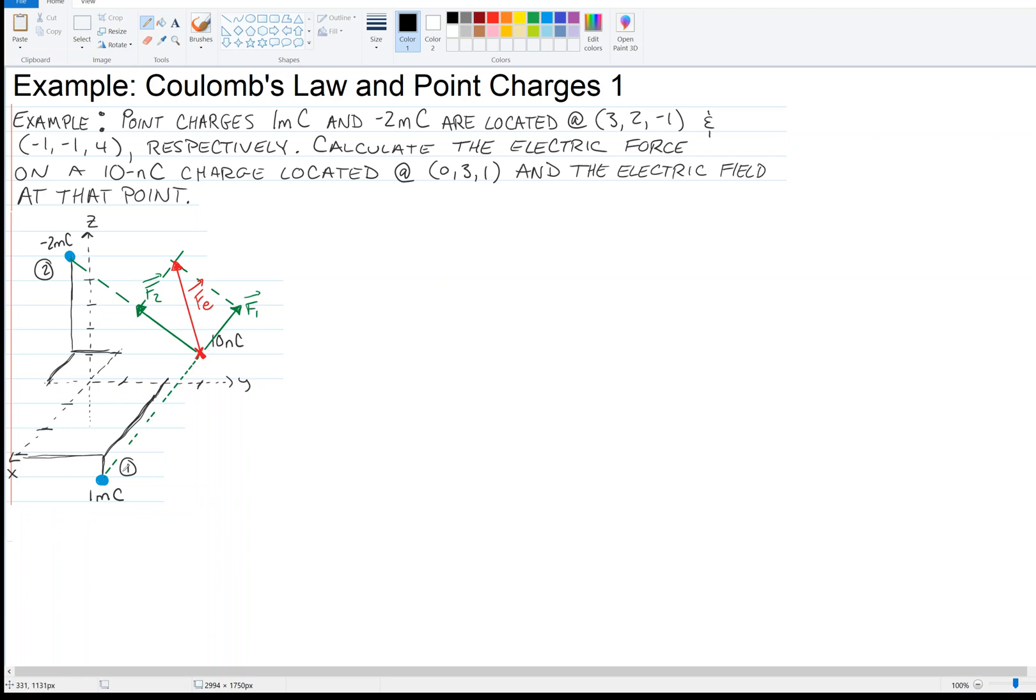Then we're going to calculate the electric field at that point due to those two blue charges. Now notice that 10 nanocoulombs and one millicoulomb have the same sign, so this 10 nanocoulomb charge is going to be repelled against that. So that's why F1 is pointing up and to the right. And then charge 2 and our 10 nanocoulombs have different signs, so the 10 nanocoulombs is going to be attracted to that minus 2 millicoulombs. So that's why I have F2 pointing the way that I do. Alright, let's get started.